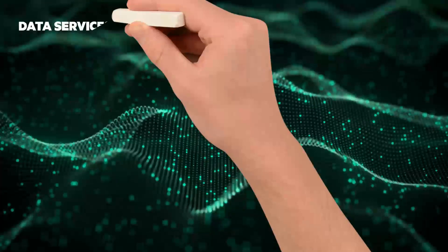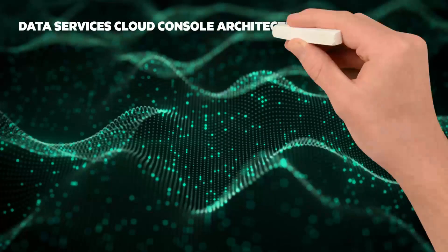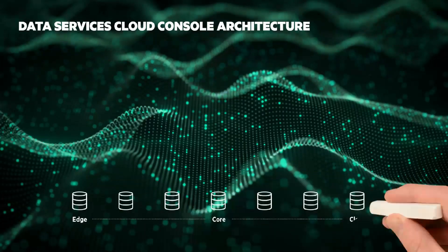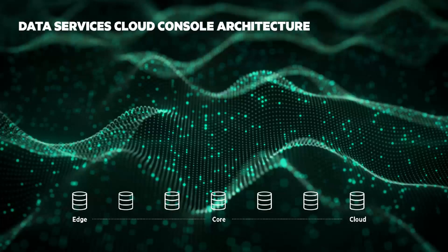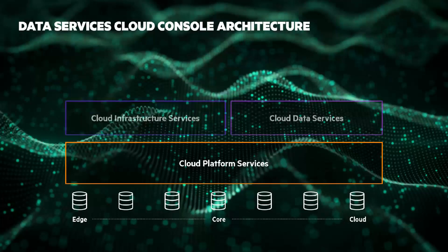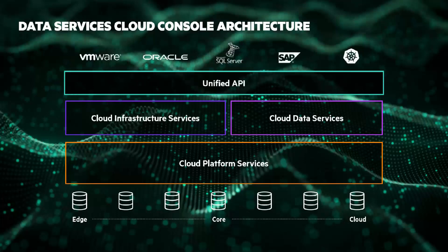Data Services Cloud Console is a cloud-native architecture that manages data and infrastructure through a SaaS-based control plane. The abstraction above edge-to-cloud infrastructure eliminates the complexity, fragmentation, and limited visibility and control of on-premises software to drive optimized automation across entire fleets of infrastructure. A unified API across edge-to-cloud data infrastructure enables infrastructure as code to automate the rapid deployment of traditional and modern applications.